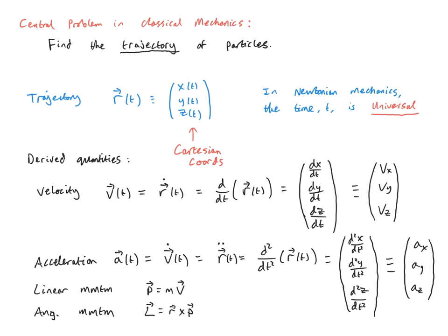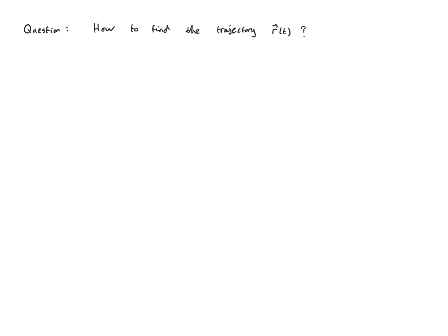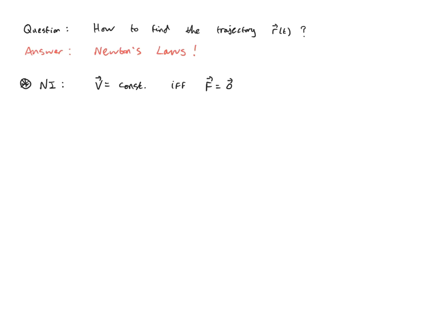The fundamental question is: how do we find the trajectory r(t) in the first place? If we knew r(t), we can get everything else. The answer is Newton's laws. The trajectory depends on the force acting on the particle. Newton's first law states that the velocity will be constant if and only if the net force equals zero — restating Galileo's principle of inertia and introducing the very concept of a force as the thing that causes velocity to change.